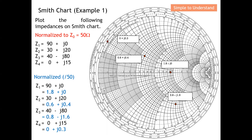I will go step by step so that you are able to follow. The first point to plot onto the Smith chart is 1.8 + j0. Since there is only a resistivity value and no reactance value, I know it will lie on the resistivity line. Looking at the numbers — 1.2, 1.4, 1.6, 1.8 — here it is. So I've plotted the first point, which is 1.8 + j0, on the Smith chart.